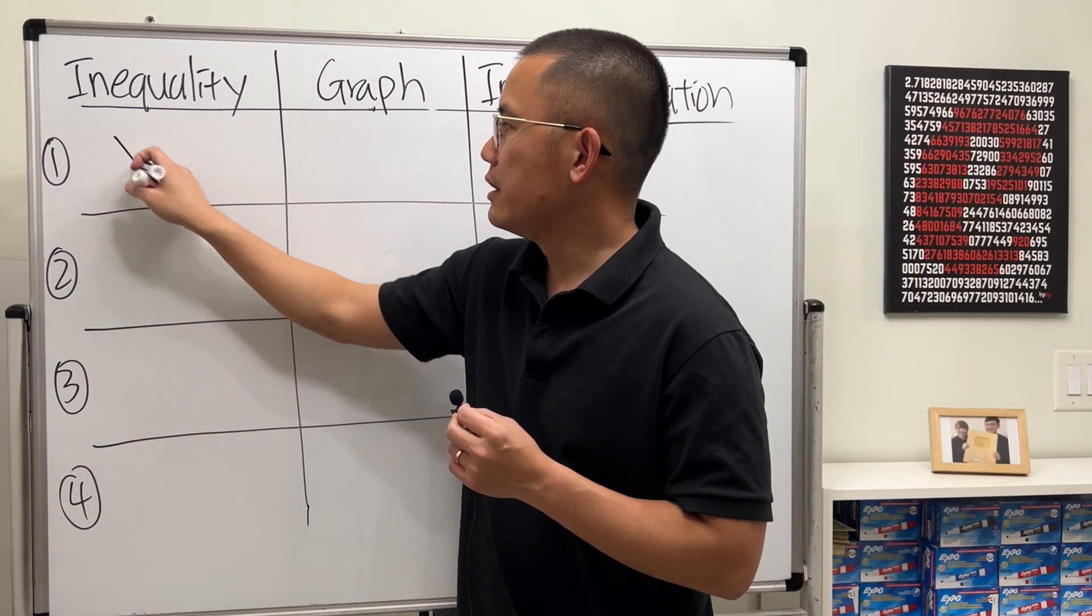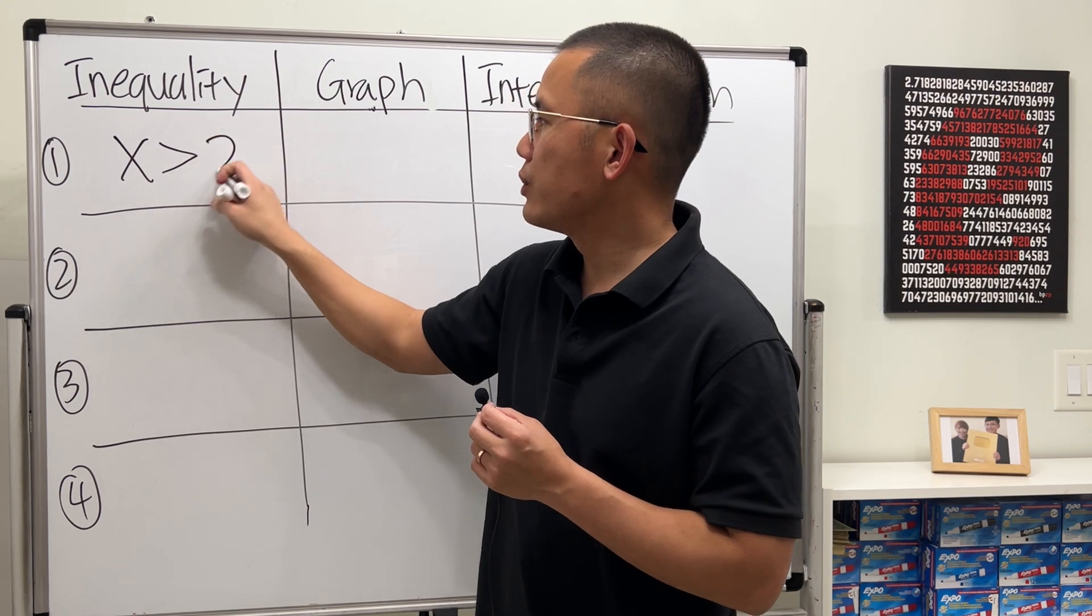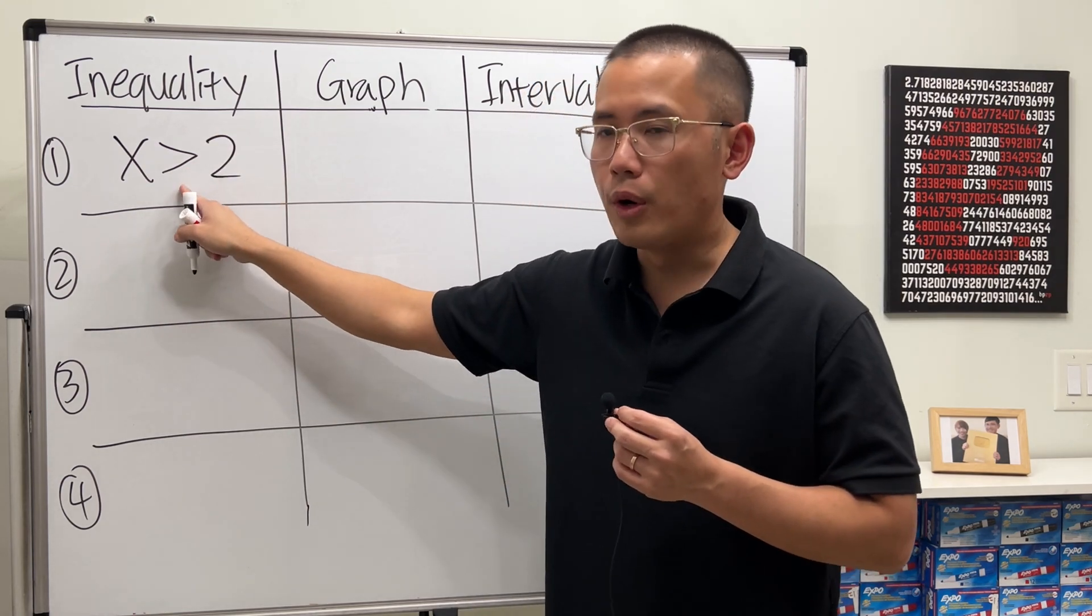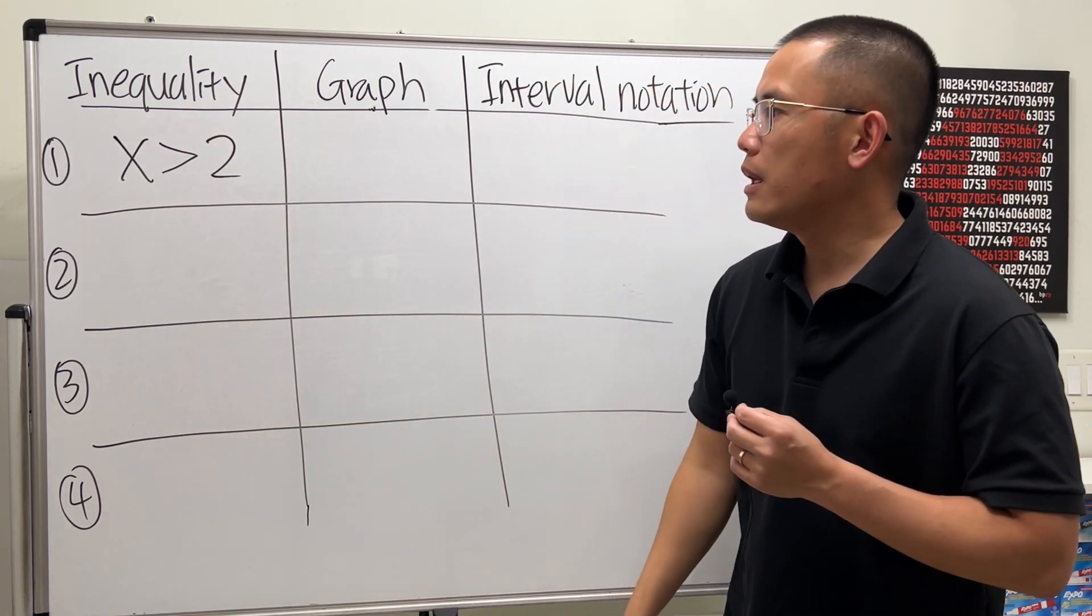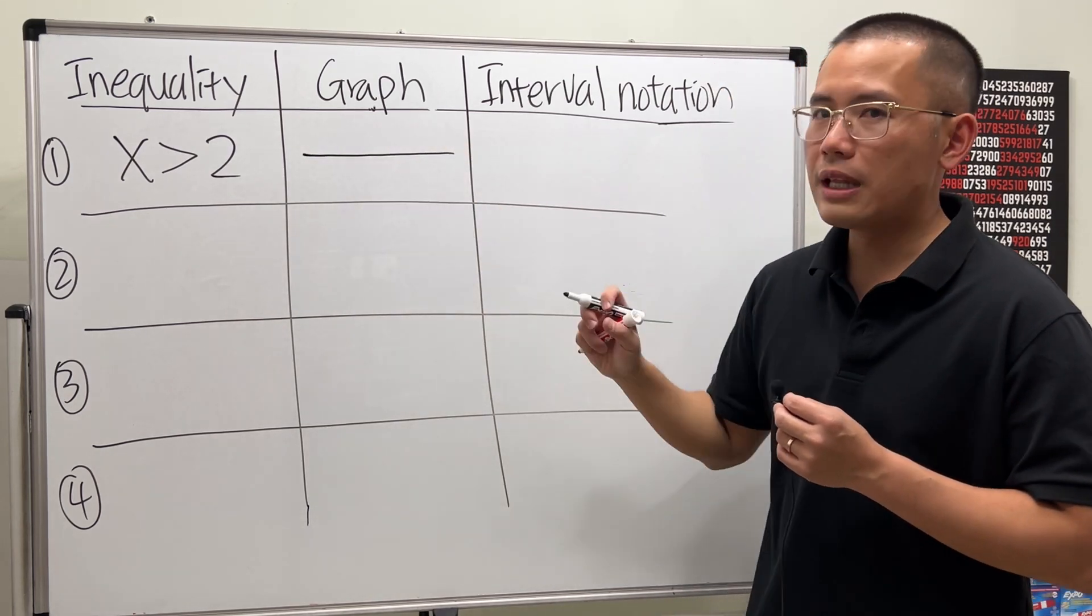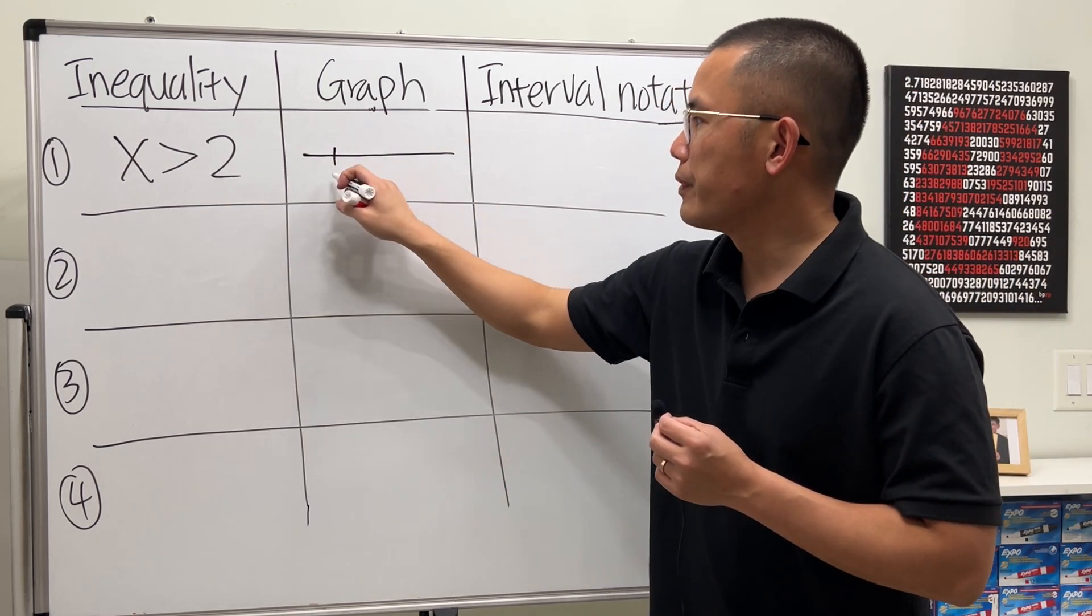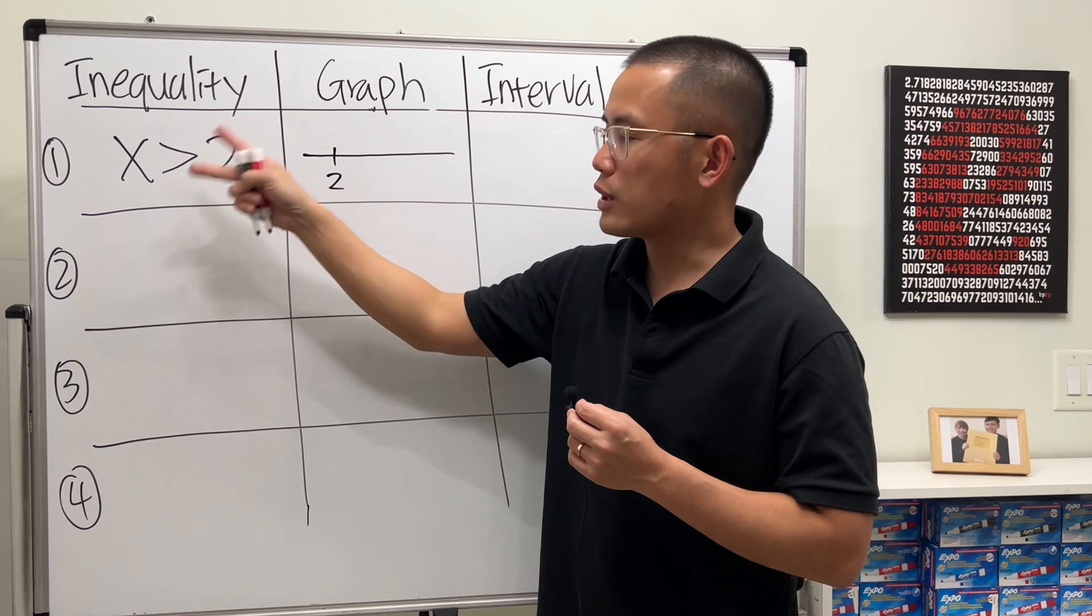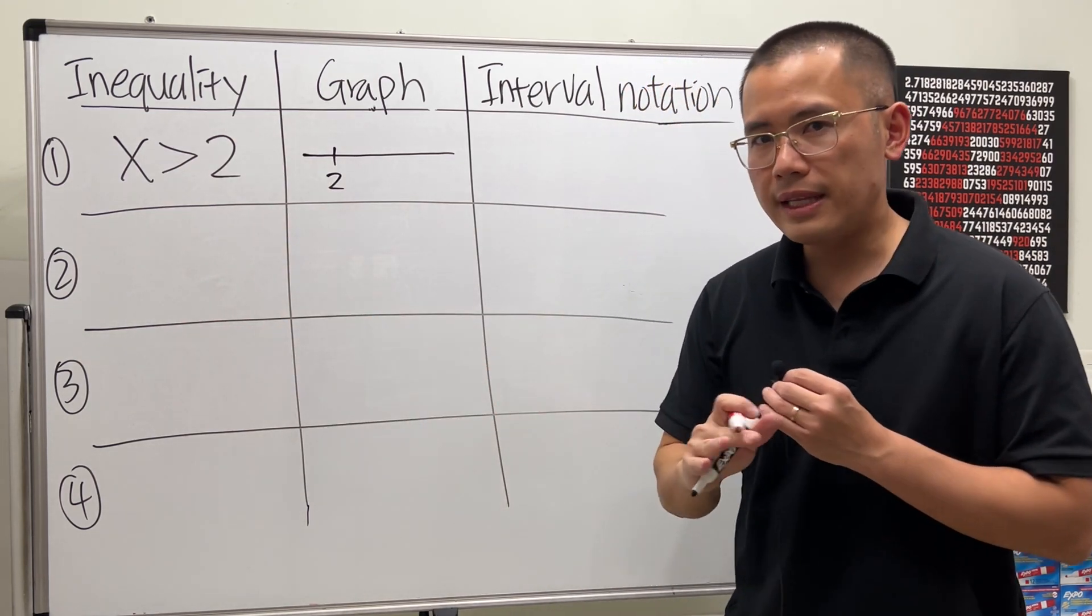Let's say we have this inequality, x is greater than 2. So as you can see, we use this symbol, that's why it's called an inequality. Then the graph of this is just that you start with a number line, you go to 2, and then right here, because it's just a greater than, that means we are not including the 2.